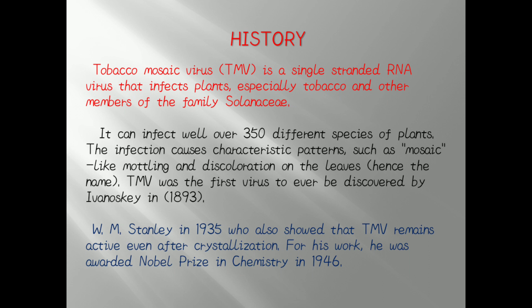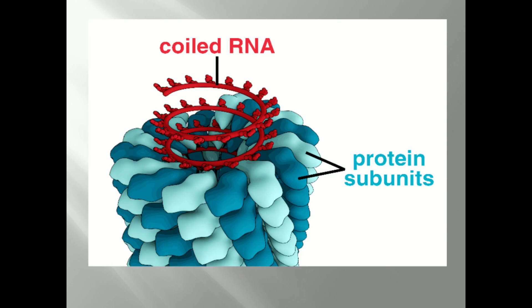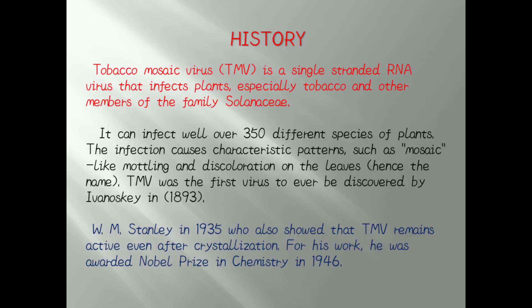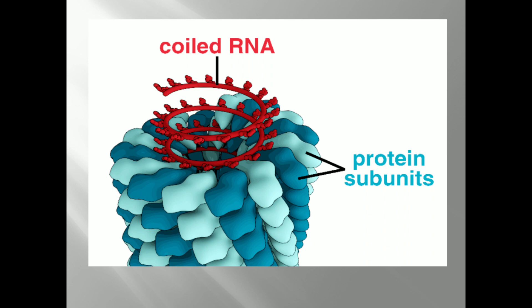W.M. Stanley in 1935 showed that Tobacco Mosaic Virus remained active even after crystallization. For his work, he was awarded the Nobel Prize in Chemistry in 1946. Observing the diagram of TMV, we can clearly see the coiled RNA represented in red, and surrounding this coiled RNA genetic material are protein subunits called capsomeres. The RNA is plus-stranded, single-stranded RNA surrounded by these protein subunits.